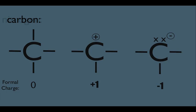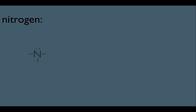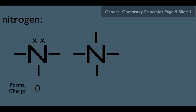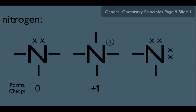Let's do the same thing with nitrogen. Any time you see nitrogen with three bonds and a lone pair, always assign a zero formal charge. Any time you see nitrogen making four bonds, he's always going to be plus one formal charge. And any time we see nitrogen with two bonds and two lone pairs, he's always going to have a negative one formal charge.